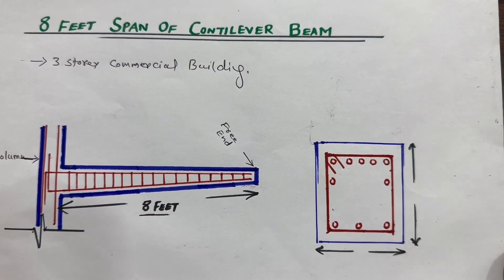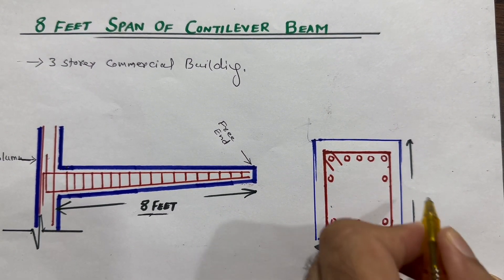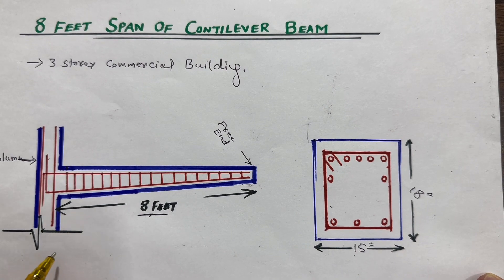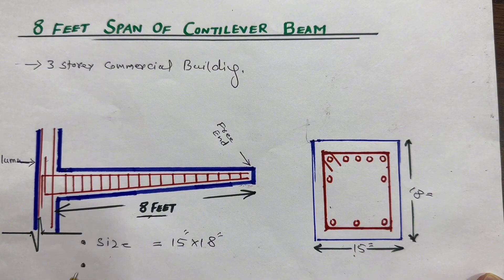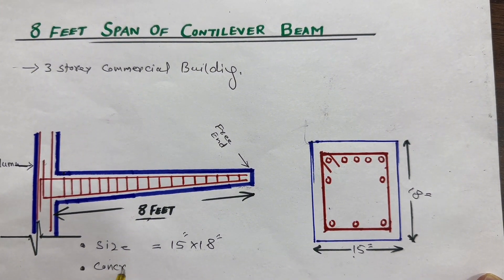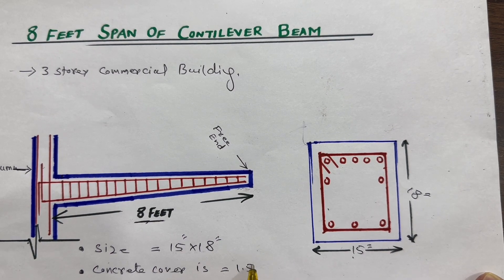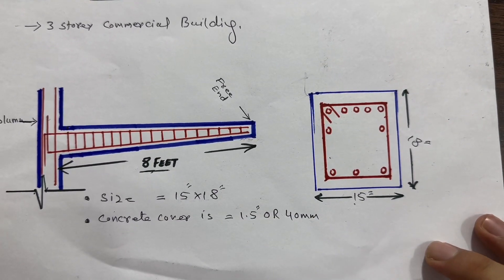In this video you can see clearly the span is eight feet. The size of this beam is 15 inches by 18 inches — depth is 18 inches and width is 15 inches. Concrete cover is 1.5 inches or 40 millimeters for each side.